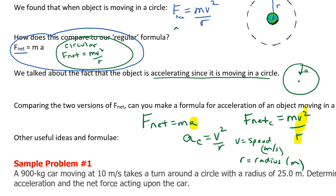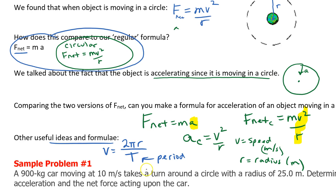Another useful formula: when something moves in a circle, the speed equals the distance divided by the time. That distance is one circumference, which is 2πr, and the time for one revolution is the period T. So v equals 2πr divided by T.